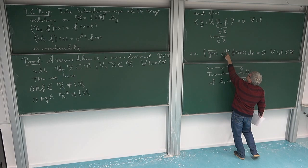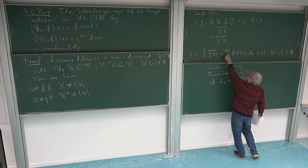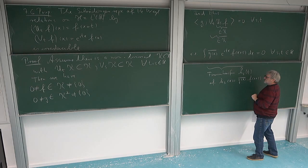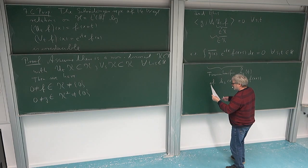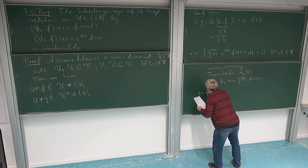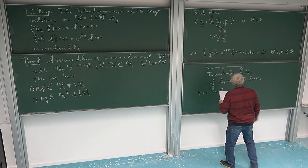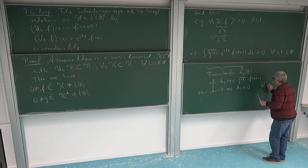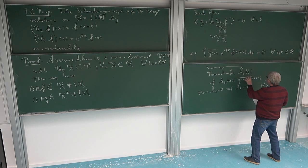If we fix s, we can consider this as a function in t equal to zero. But as a function in t, this is the Fourier transform of h_s. So the Fourier transform of h_s equals zero, which means h_s itself must equal zero. This holds for all s, so we conclude that the function g-bar(x) · f(x+s) = 0 as a function of x, for all s.